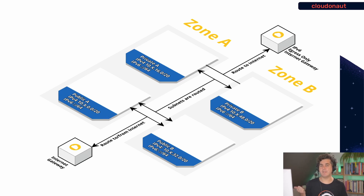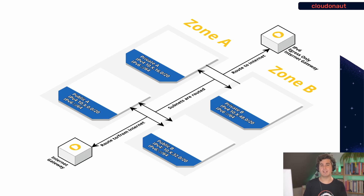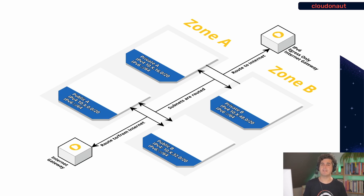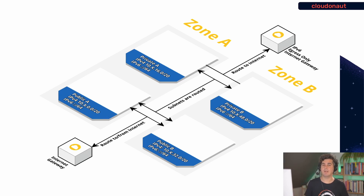The first thing we have to do is allocate an IP version 6 address block for our VPC, and this is always a /56 block allocated by AWS — we cannot modify this block. Then for each subnet we also allocate an IP version 6 block, and those are always /64 blocks. We cannot change this either, but they must be a subset of the VPC's address range. That's what we have to do to enable IP version 6 at the VPC layer.